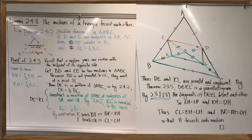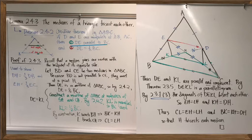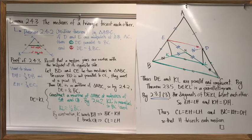From there, we turn to the medians of a triangle, which starts with the midline theorem. That theorem says that if you join the midpoints of two sides of a triangle, that segment is parallel to the third side and also half its length. The midline theorem is not something we proved in class, but it is something we need to prove the next lemma used to show that the medians of a triangle are concurrent.